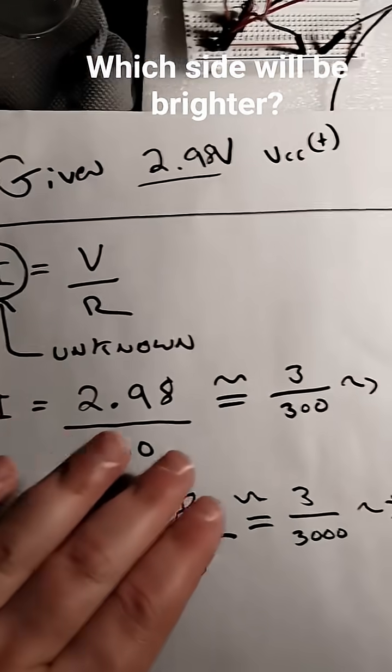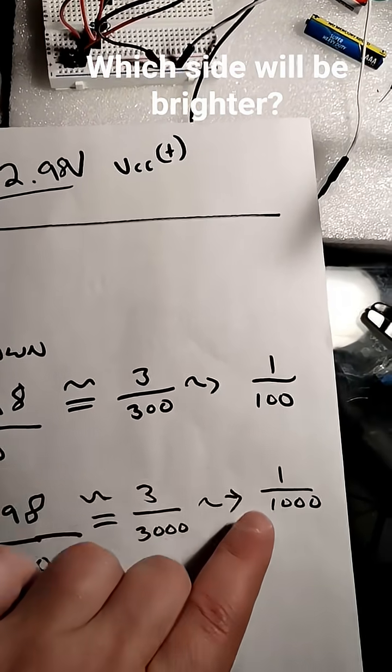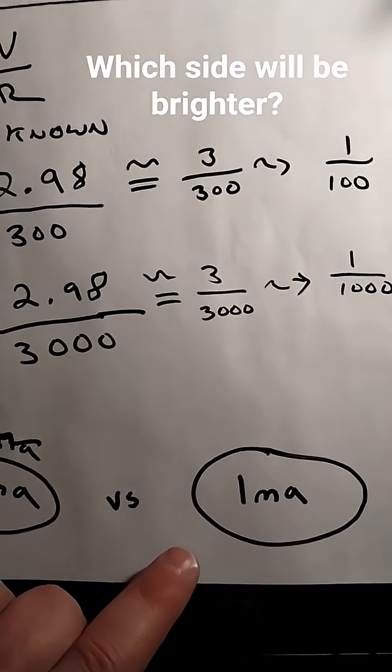2.98, let's roughly think it's 3, right? Over 300, 1 over 100. 3 divided by 1,000. There you go.